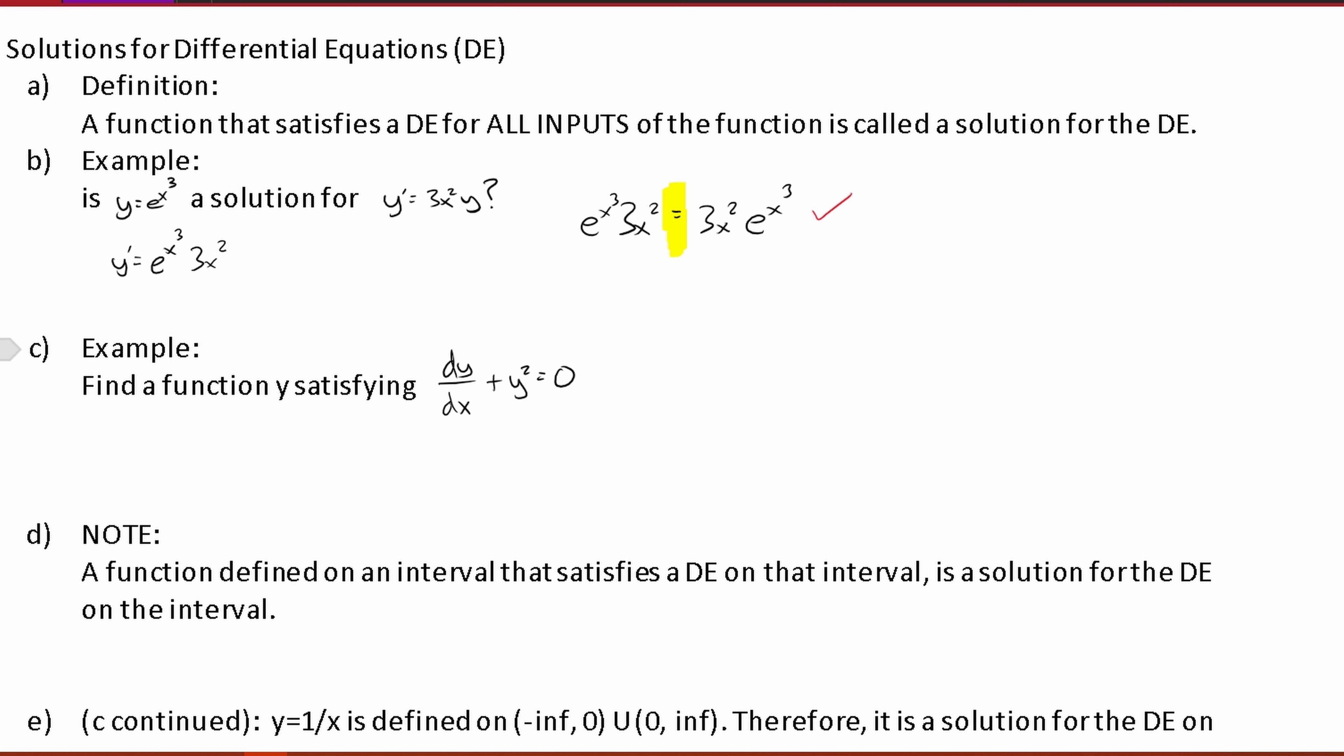Now we want to find a function y satisfying this right here. Well, let's just for example say that y is like 1 over x, and this can be anything. You can basically have any kind of function inside of here.